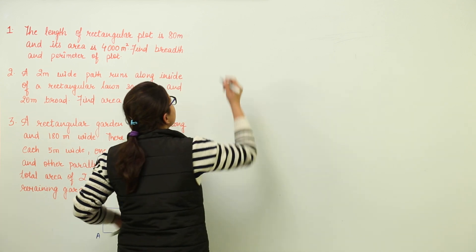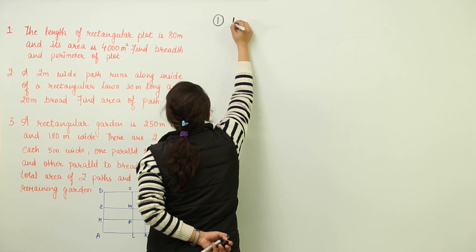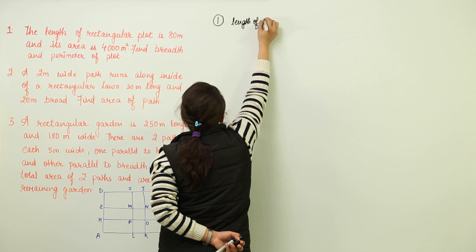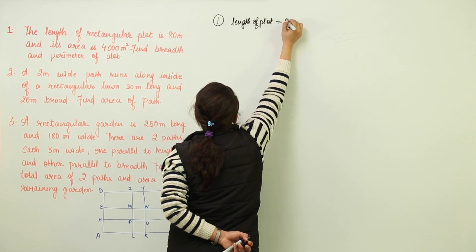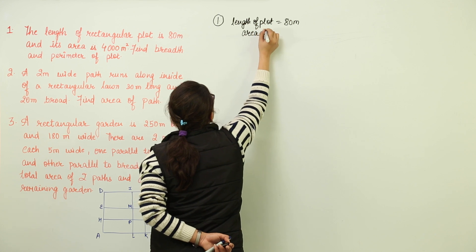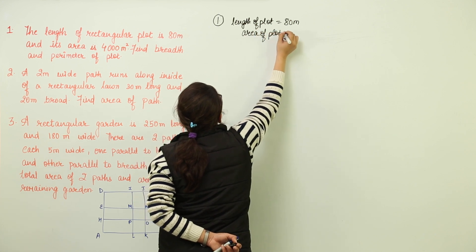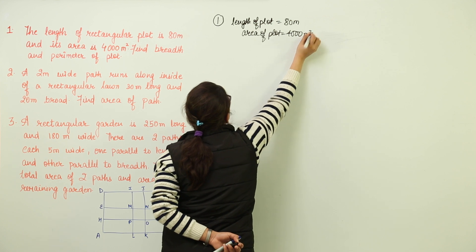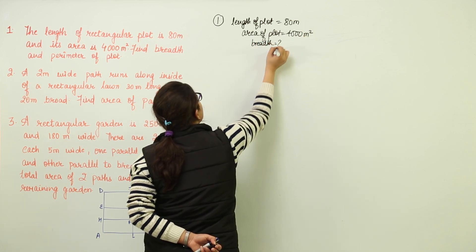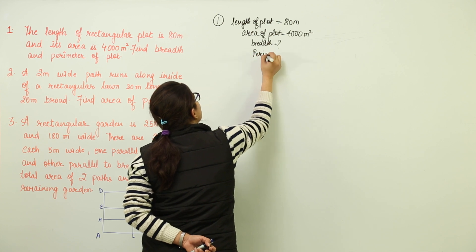First of all, whatever data has been given, write it down. That is the length of plot, so we write the length of plot given as 80 meters. Next we are going to write the area of plot which has been given to us as 4000 meter square, and we have to find out the breadth for this plot as well as the perimeter.